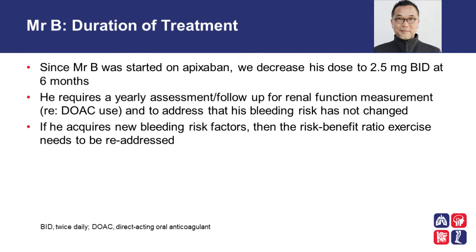Since Mr. B was started on apixaban, his dose was decreased to 2.5 milligrams twice a day at six months. He will require a yearly assessment and follow-up for renal function measurement, because direct oral anticoagulants depend on some degree of renal elimination. If there is ever a decrease in renal function, this can impact the DOAC concentration in the blood, so renal indices should be followed for the duration of therapy to ensure that the bleeding risk always remains low. If he acquires new bleeding risk factors, the risk-benefit ratio exercise needs to be re-addressed.